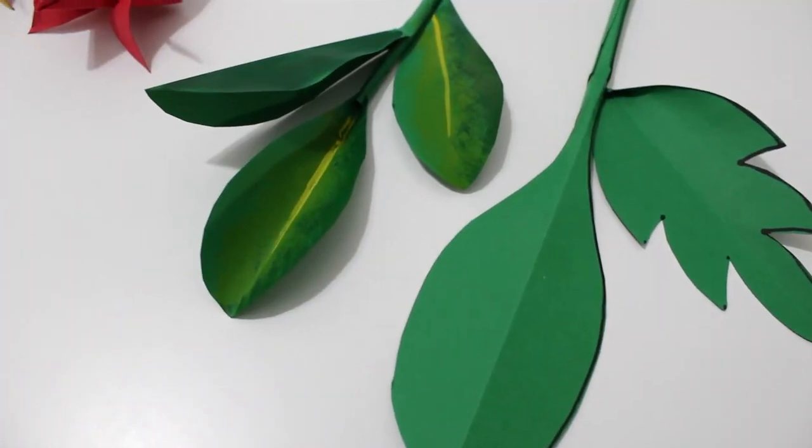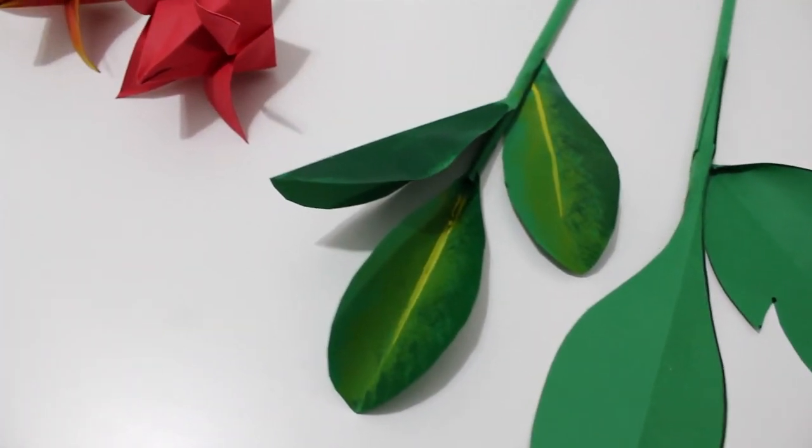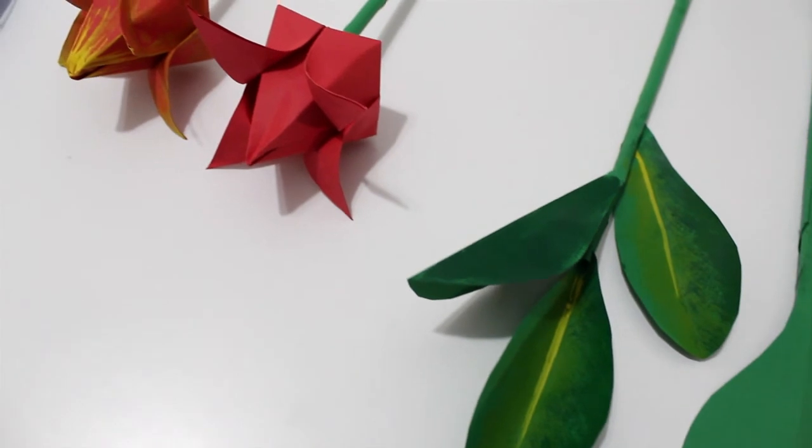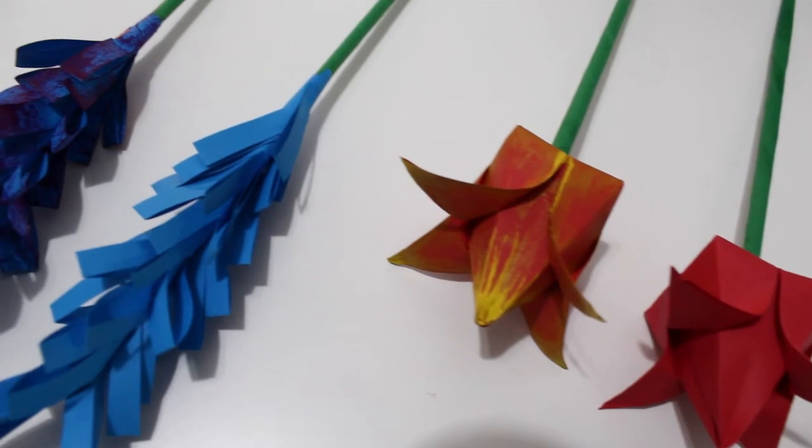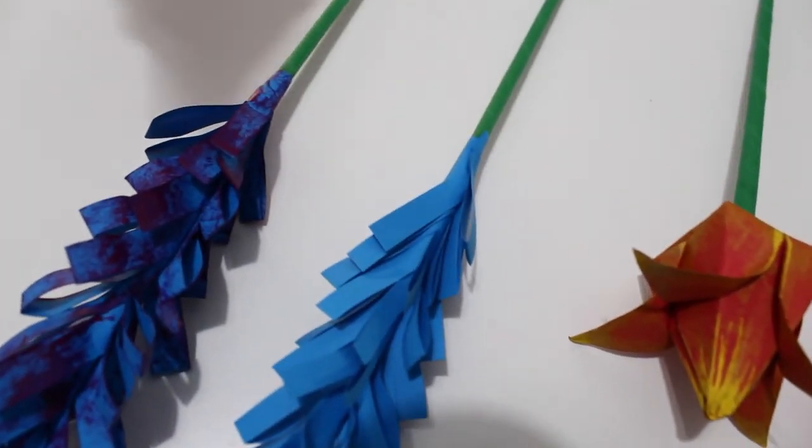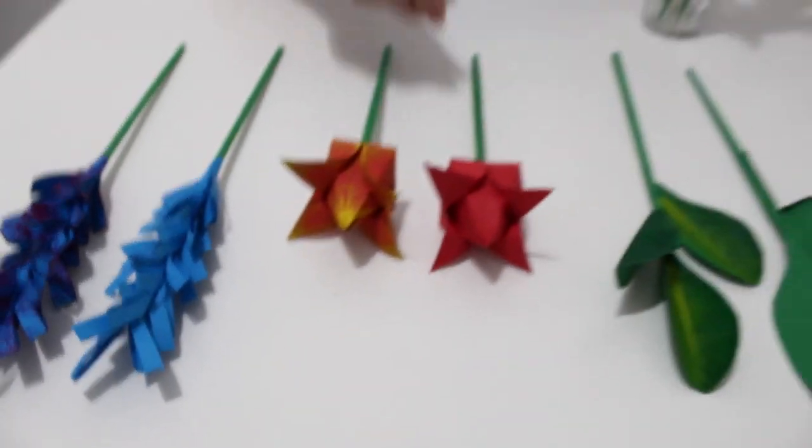Bueno chicos, ya lo tenemos. Ahora si queréis podemos darle un toque más especial. Yo con pintura acrílica le he pintado, por ejemplo, al tulipán amarillito para potenciarlo, y a la lavanda con moradito en las hojas.